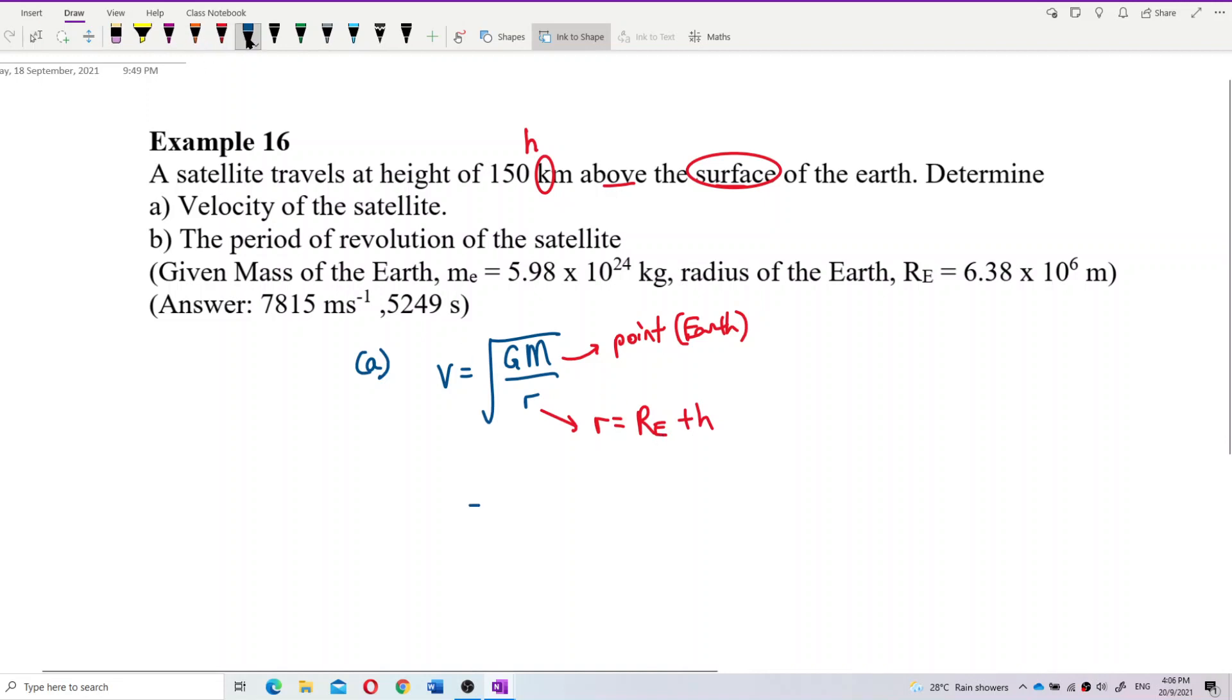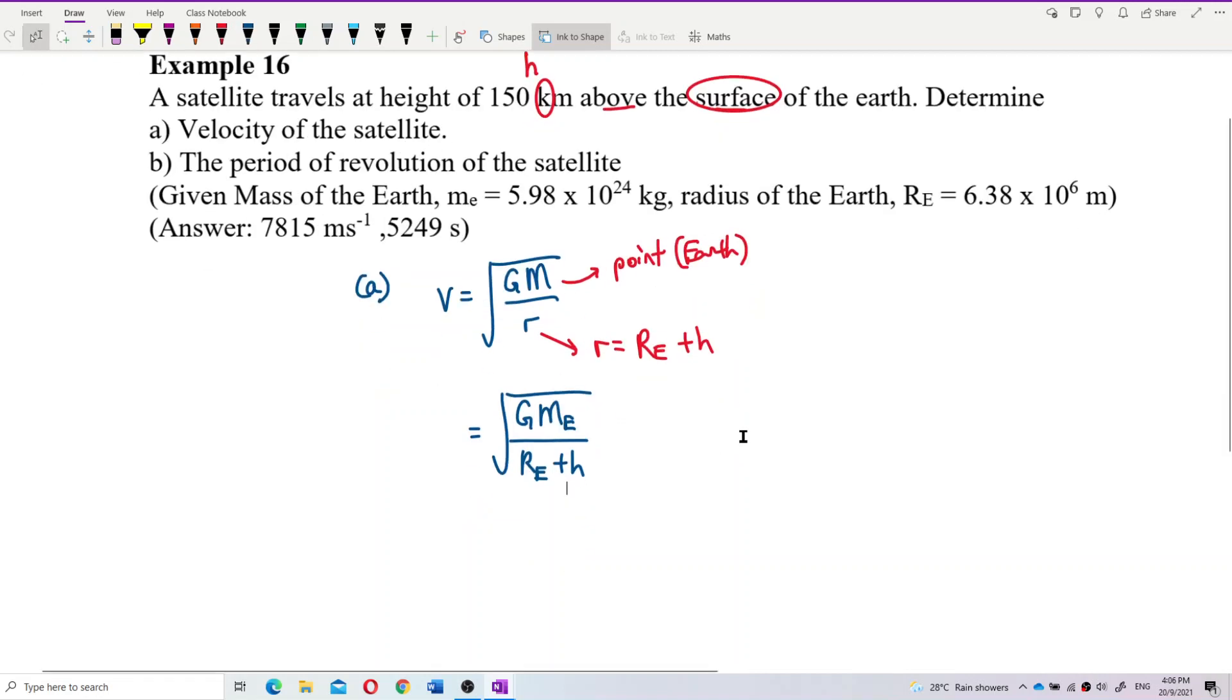Let us substitute. So we have GM. So this becomes G mass of Earth, and this is the radius of Earth plus h. So let's substitute inside all the values.